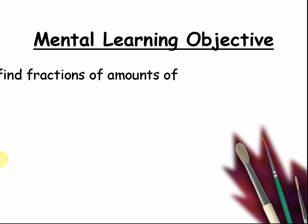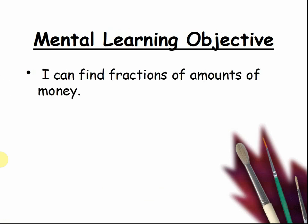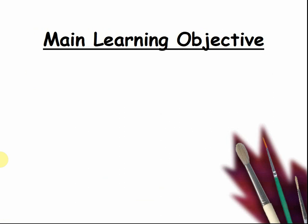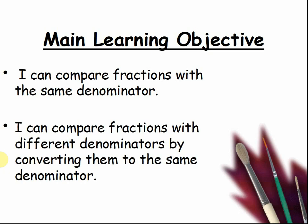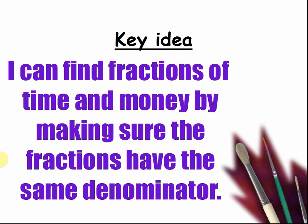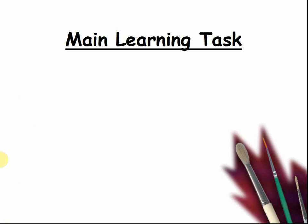Mental learning objective: I can find fractions of amounts of money. Main learning objective: I can compare fractions with the same denominator. I can compare fractions with different denominators by converting them to the same denominator. I can find fractions of time and money by making sure the fractions have the same denominator. That's the key idea today — the big idea which you must keep in your head. Main learning task.